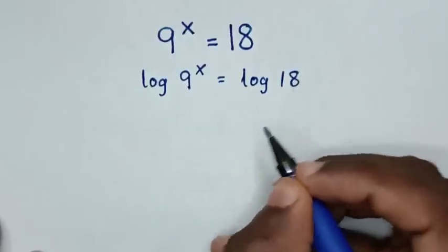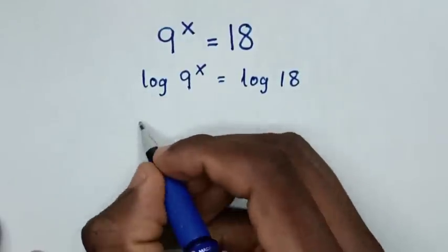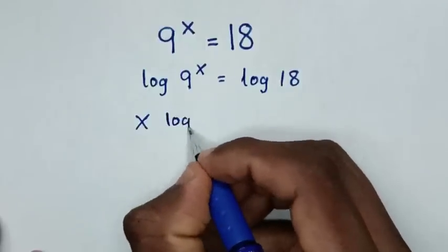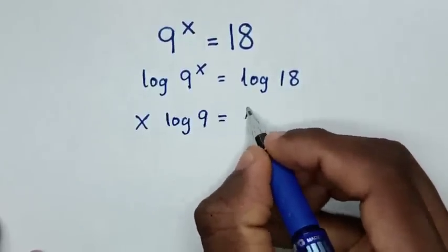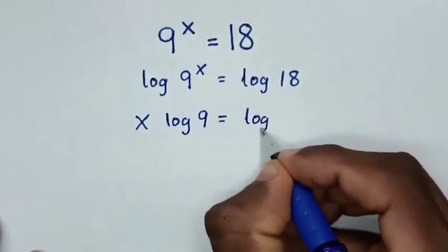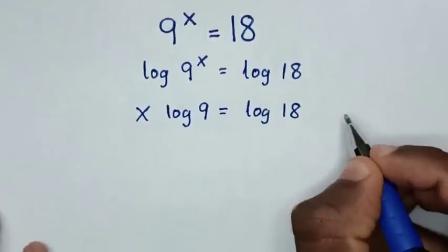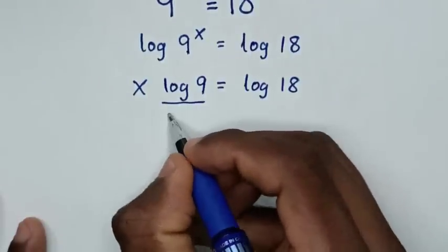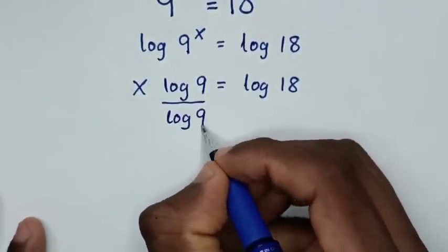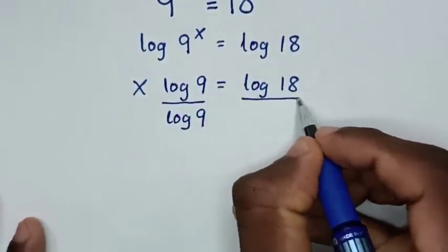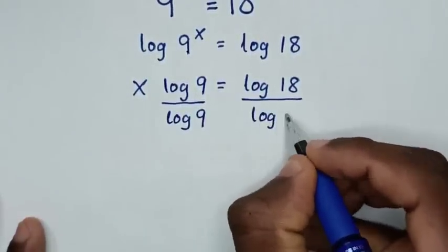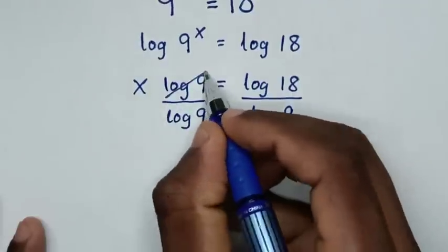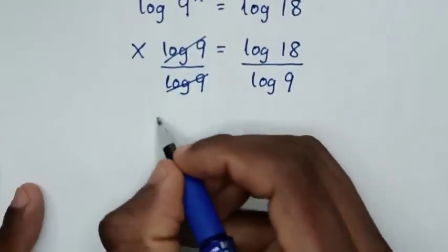Then in the next step, this power of x will move to the base, so it will be x log of 9 is equal to log of 18. Then in the next step, we'll divide by log of 9 on both sides.